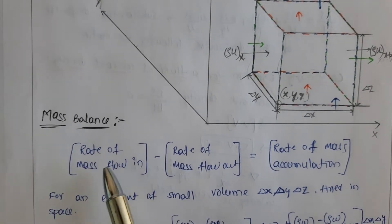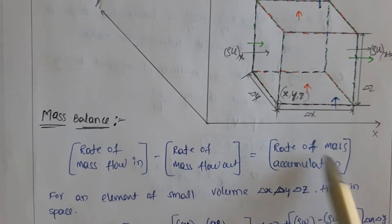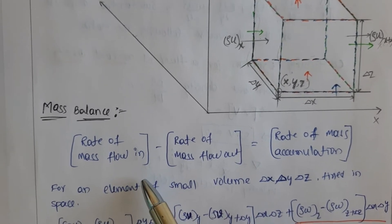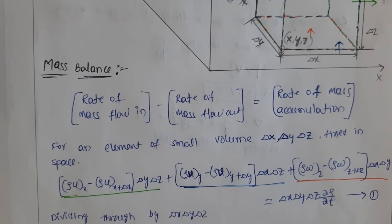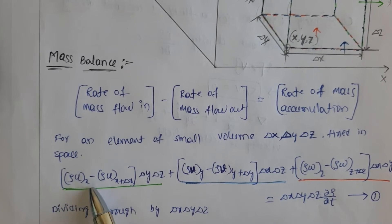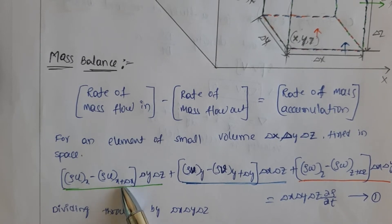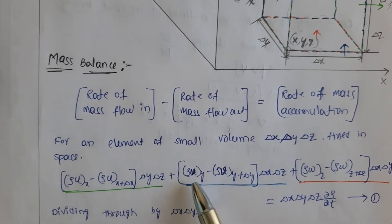The general equation is: rate of mass flow in minus rate of mass flow out equals rate of mass accumulation. For the x direction: rho·u at x minus rho·u at x plus delta x, entering at face x and leaving at face x plus delta x, multiplied by the area gives the mass flow rate.